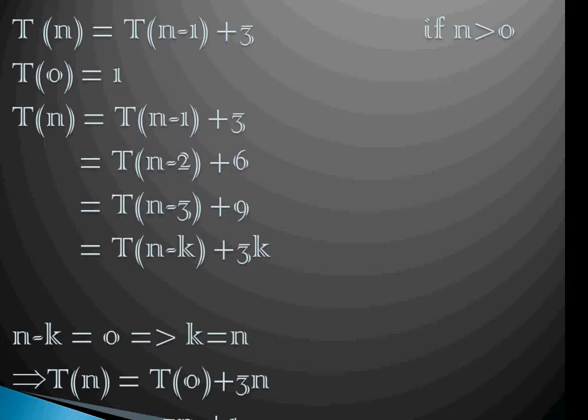Now we want to express this in terms of T(0). So in that case n-k will be equal to 0, or k will be equal to n. So this expression would finally reduce as T(n) = T(0) + 3n which is nothing but 3n + 1 because T(0) is 1 here.